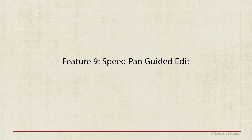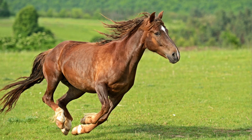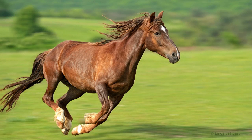Number nine is Speed Pan, a guided edit that adds a motion blur behind your subject to create a dramatic stop motion effect. Here's the original photo of a horse, and here it is after using the guided edit Speed Pan. This isn't something you would use all the time, but for the right photo it adds a very nice touch.